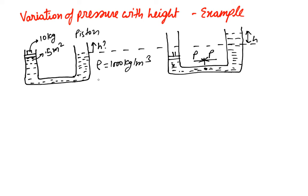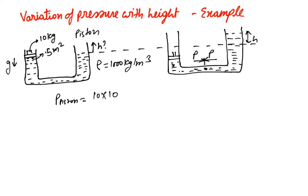What is the pressure provided by the piston? The pressure from the piston equals force divided by area. The force is mass times gravity: 10 kg × 10 m/s² = 100 N. Dividing by the area of 0.5 m² gives us 200 Pascals. Pascal is the unit for pressure.